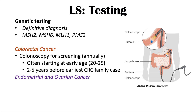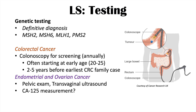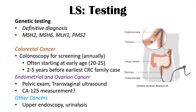For endometrial and ovarian cancer, pelvic exam and transvaginal ultrasound may be utilized, along with CA-125 measurement in certain cases. Other cancers can also be screened for, including upper endoscopy for gastric cancer. Urinalysis can be used to screen for upper tract urothelial carcinomas, which can occur at higher levels in Lynch syndrome patients — particularly those with an MSH2 mutation, who are at very high risk of this cancer.